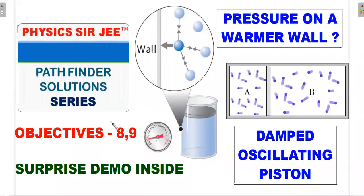Welcome back to Channel Physics Sergey. Here in the Pathfinder Solution Series, I've announced in the community tab that I'll be taking up objective questions 8 and 9 from the thermal physics chapter that usually bug students. The first problem is about the comparison of pressure exerted by a gas on a warmer wall compared to a colder wall.